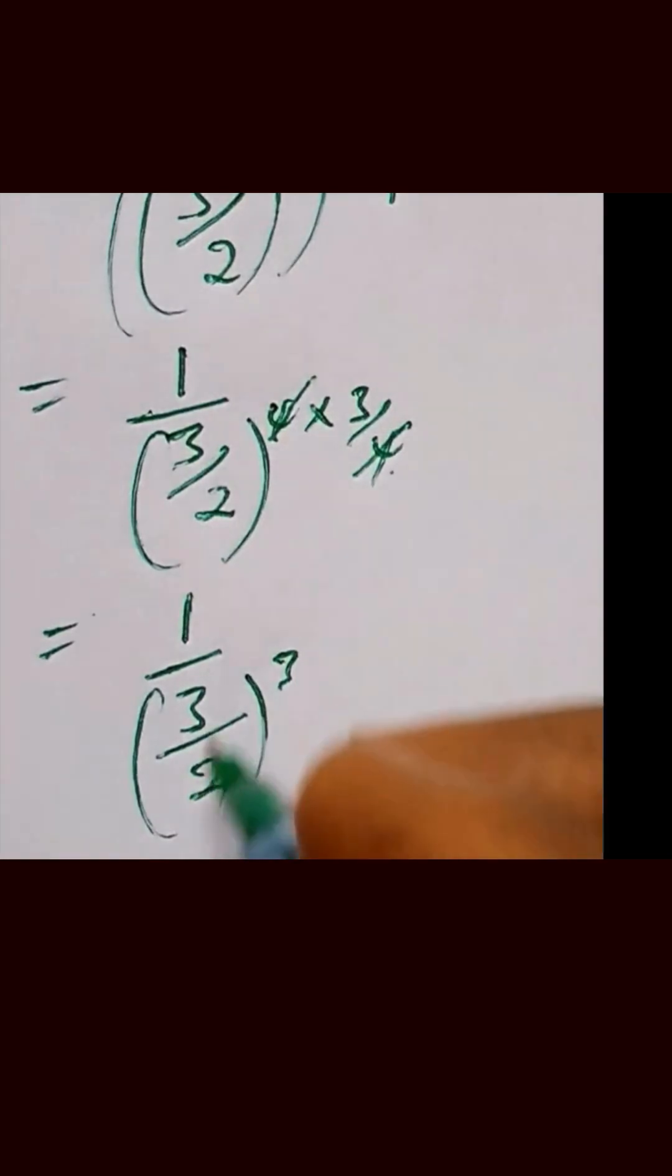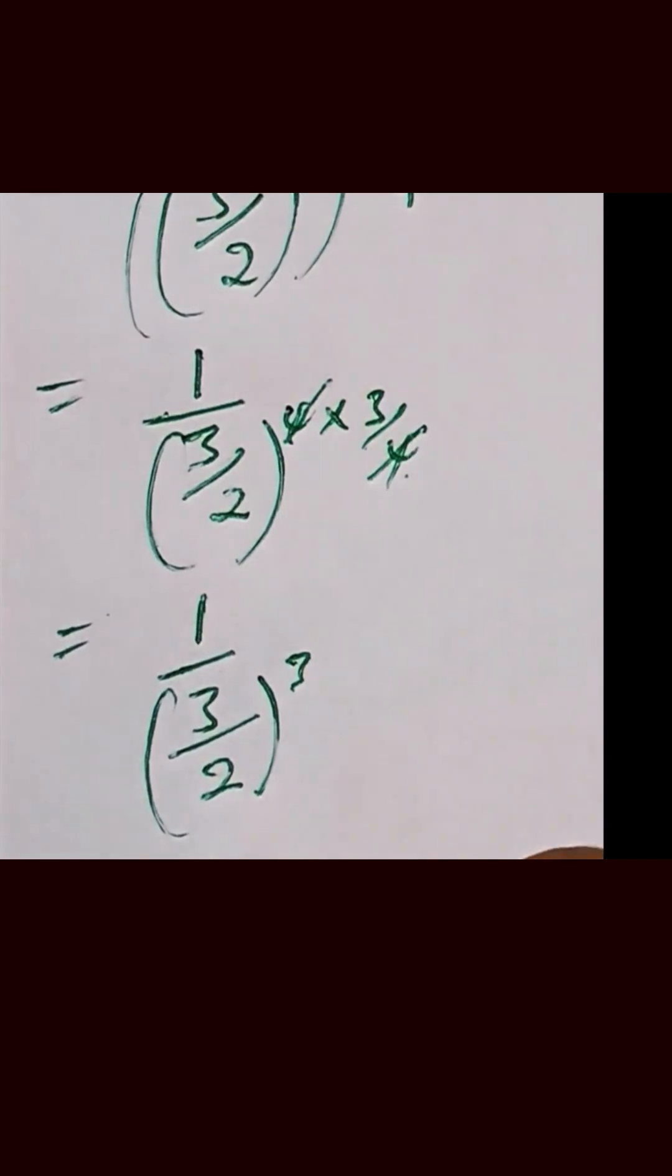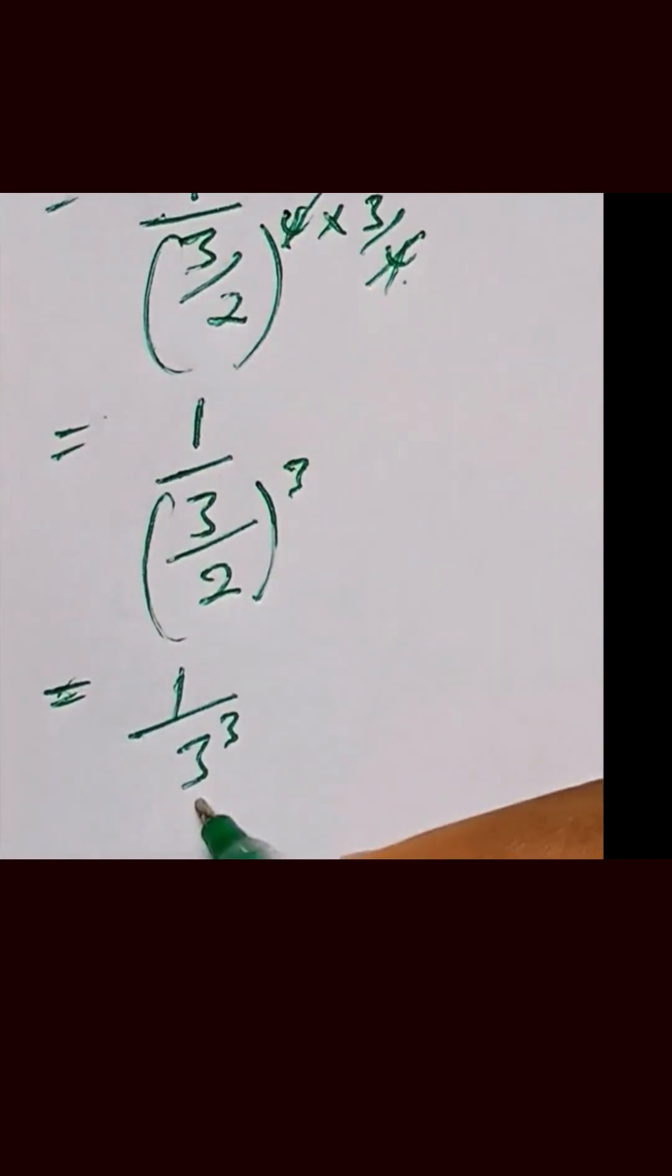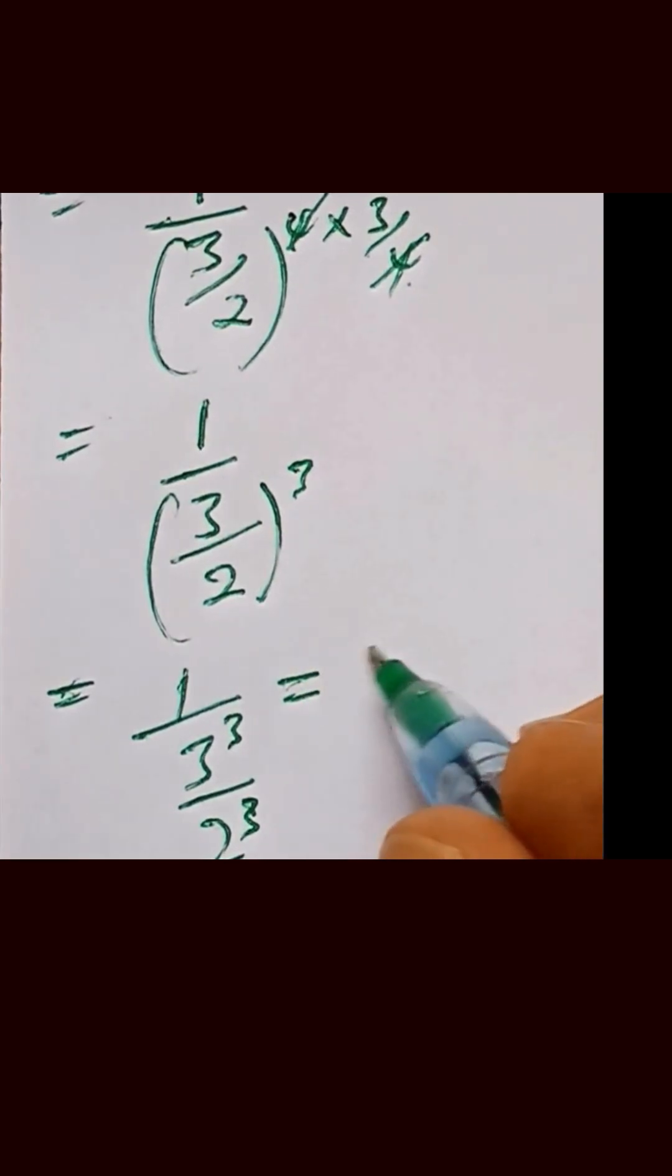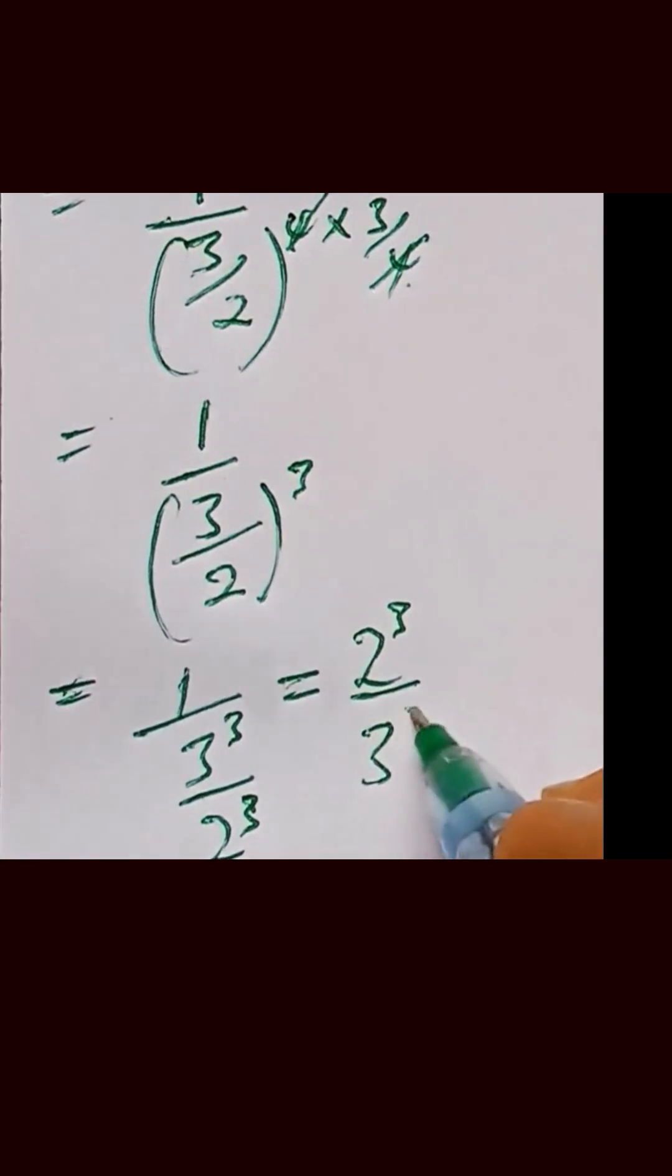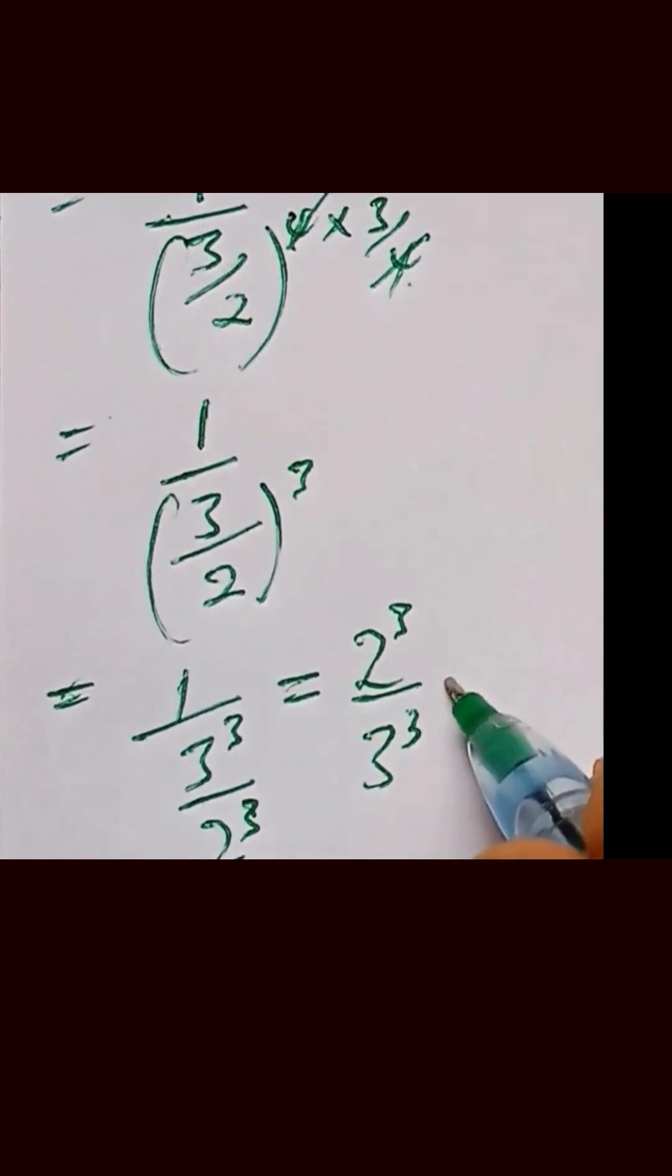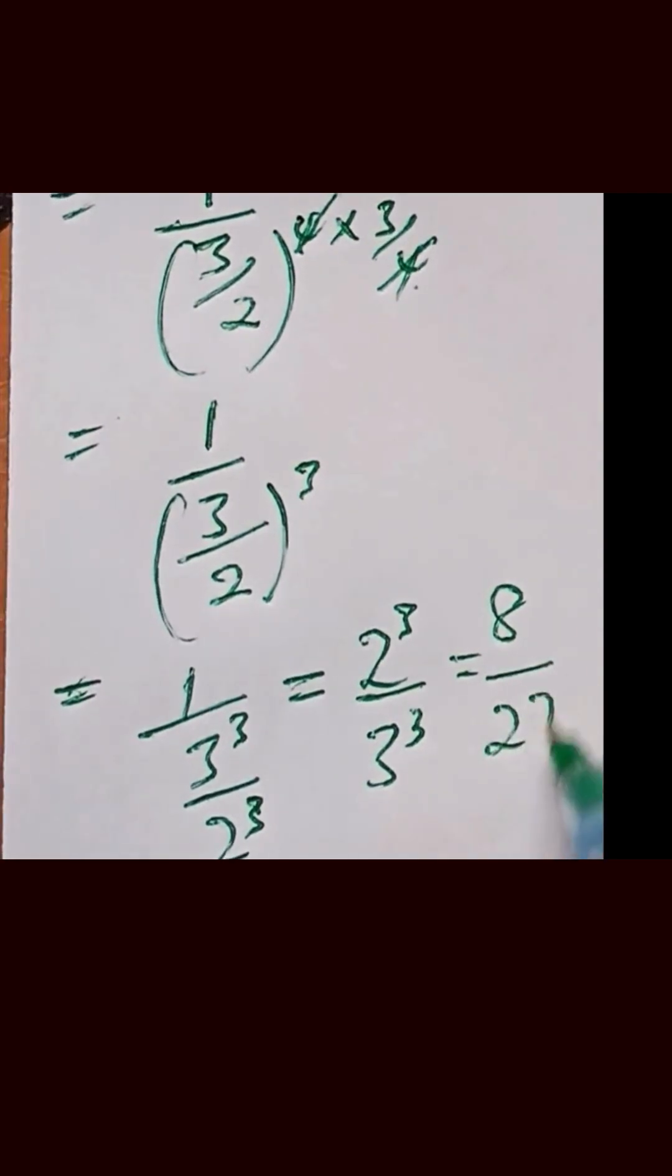And this can be written as 1 over 3 raised to the power of 3 over 2 raised to the power of 3. We flip this. By taking the inverse, we have 2 raised to the power of 3 over 3 raised to the power of 3. And that is written as 8 over 27.